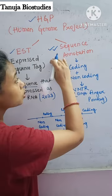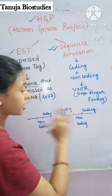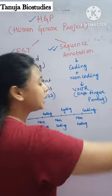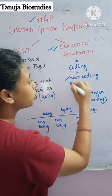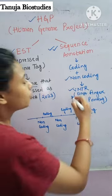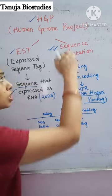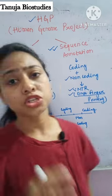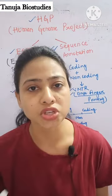Now, what is Sequence Annotation? It includes both coding and non-coding sequences. That means the complete DNA sequence is known — including the non-coding part, such as VNTR sequences, which help in DNA fingerprinting. So later on, Sequence Annotation was preferred for the Human Genome Project.